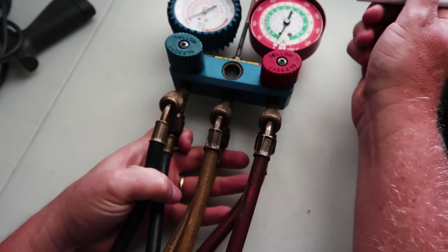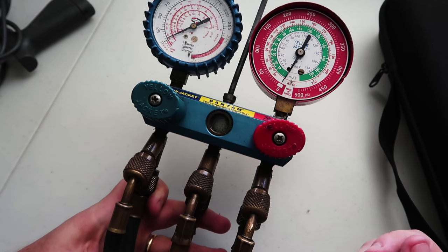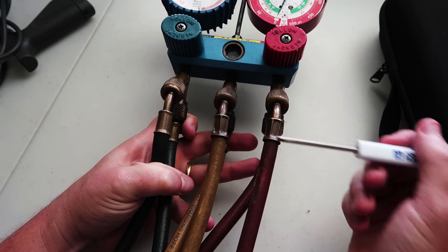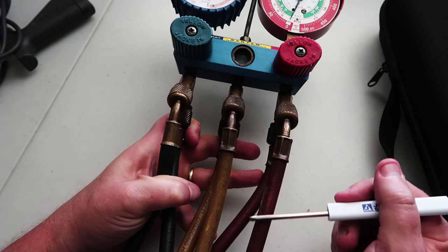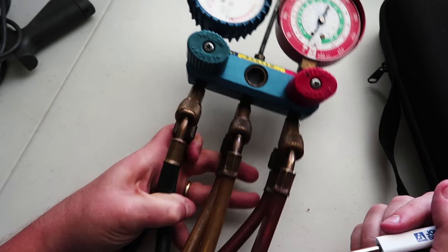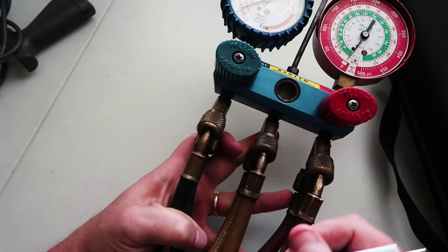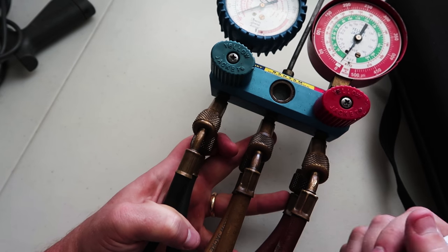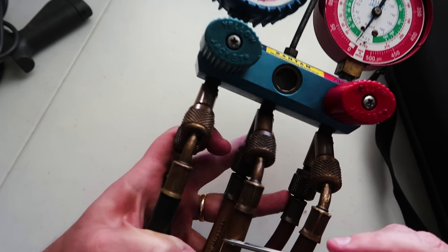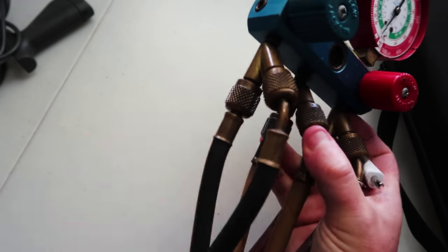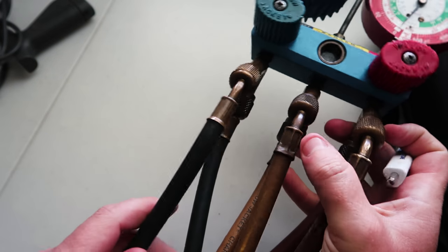This is what we call our high-side gauge, our high-pressure gauge. The hose is red for that. Now again, does the color of the hose matter? Not really, but we use these standardized colors, so that way we don't accidentally get them on the wrong side. The center port here is for our charging and recovery, and we use yellow for that, and then our left side is our low side, our low-pressure side, and it feeds up into this gauge right here.